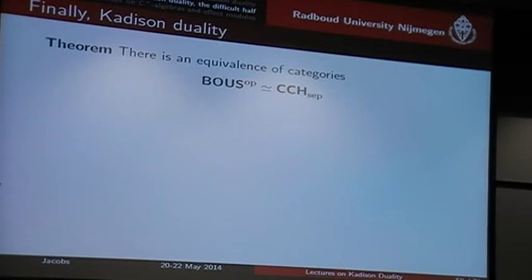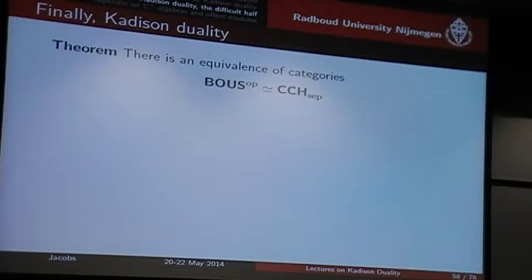So finally, the Kadison duality. There is an equivalence of categories between Banach order unit spaces and convex compact Hausdorff spaces. This was my goal for the lectures. And since I have some time left, I'll put things a bit more in perspective.